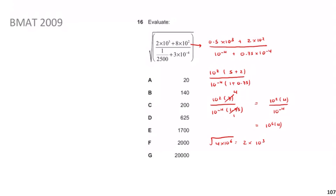Taking the square root of 4 × 10⁶ gives 2 × 10³ = 2000. The answer is F. A useful tip: in the BMAT, the answer choices are not random — they're designed around common mistakes students make. Noticing that many options are of the form 2 × 10ⁿ signals the answer involves 2 with some number of zeros, helping you check your working.